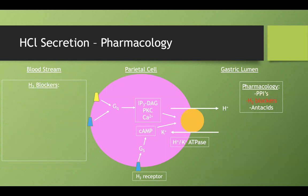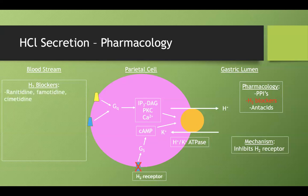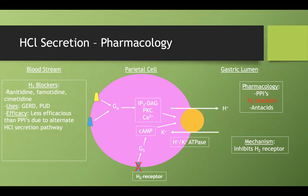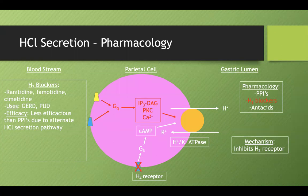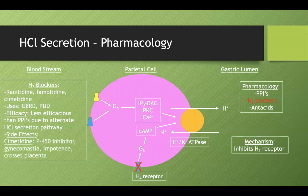H2 blockers — ranitidine, famotidine, cimetidine — inhibit the H2 receptor. They're less efficacious than PPIs because blocking H2 only stops one part of the pathway; hydrogen ions can still be produced through the M3/GQ route. Cimetidine side effects are high yield: it's a P450 inhibitor and is associated with gynecomastia and impotence. It also crosses the placenta.